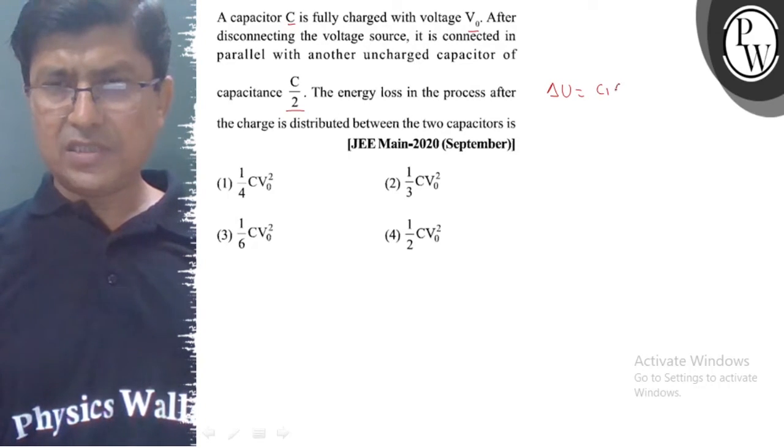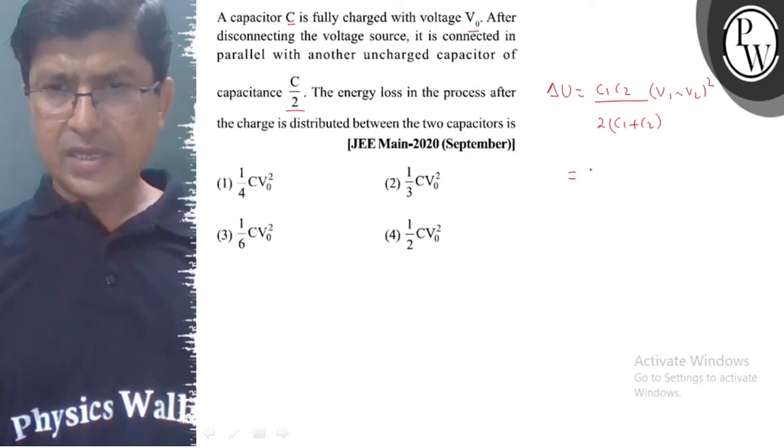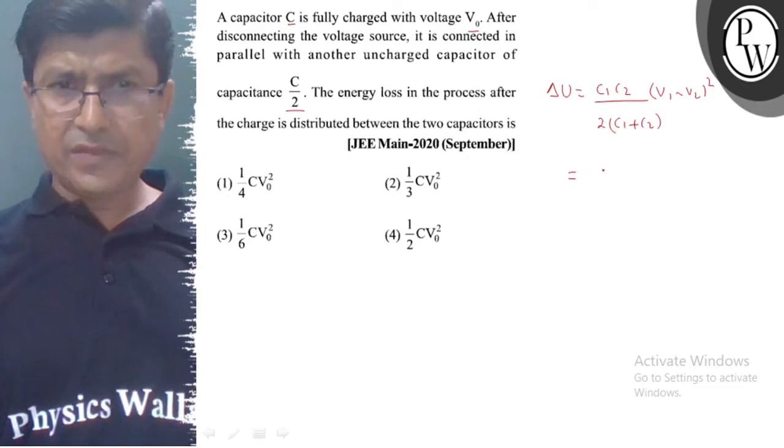...is equal to C1 C2 upon C1 plus C2 times V1 difference V2 whole square. This loss in energy value, report here, C1 given as...